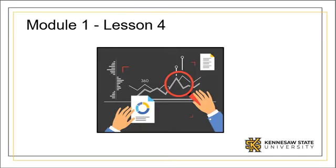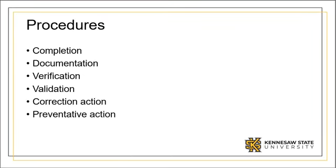Let's now talk about some other common process analysis tools other than value stream maps. A procedure is a document that specifies the way to perform an activity. It is highly advantageous to include the operator in the development of a procedure. Procedures not only outline the steps needed to complete an activity, they also create a checks and balances system from which there can be documentation, verification, validation, and as needed, corrective action and preventative action. These are all deployed to create a closed loop around a set of activities.